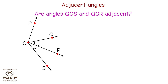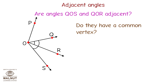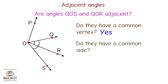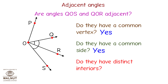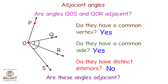Are angles QOS and QOR adjacent? Do they have a common vertex? Yes. Do they have a common side? Yes. Do they have distinct interiors? No. Are these angles adjacent? No.